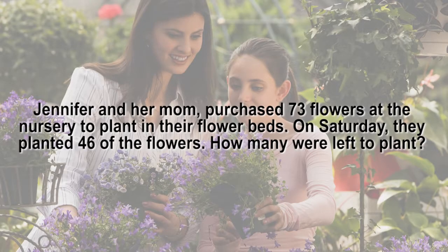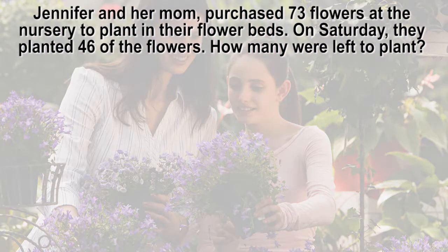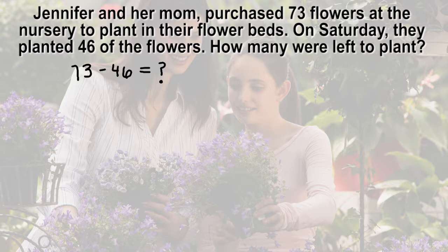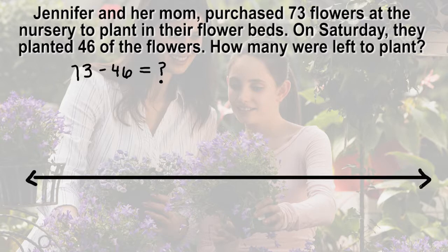Let's begin with the problem. Jennifer and her mom purchased 73 flowers at the nursery to plant in their flower beds. On Saturday, they planted 46 of the flowers. How many were left to plant? The subtraction equation to represent this problem is 73 minus 46 equals something. This is called a take from problem because there is a total and an amount is taken from the total. Start by drawing an open number line with 73 on the right side, since we will be taking 46 from 73.